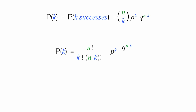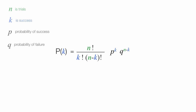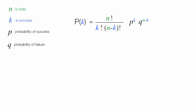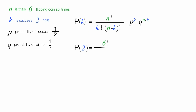Now, for some numbers: there are six trials, flipping a coin six times, with two successes — two tails. The probability of success is one-half and the probability of failure is one-half. So I'm going to write P(2), and this is equal to six factorial divided by two factorial for the successes.